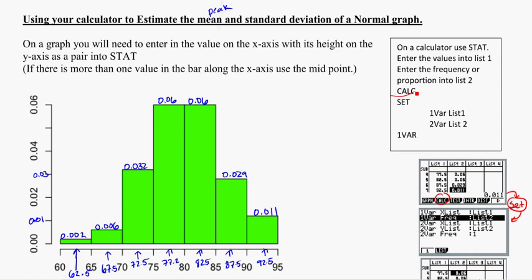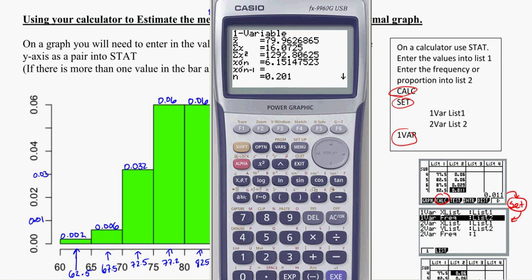Again here we hit CALC, SET. After you've hit SET, go back to VAR 1. And we've got our information now. So that X with the bar on top of it, this first one, that is the mean. X bar 79.96, so that's close to 80 is the mean.